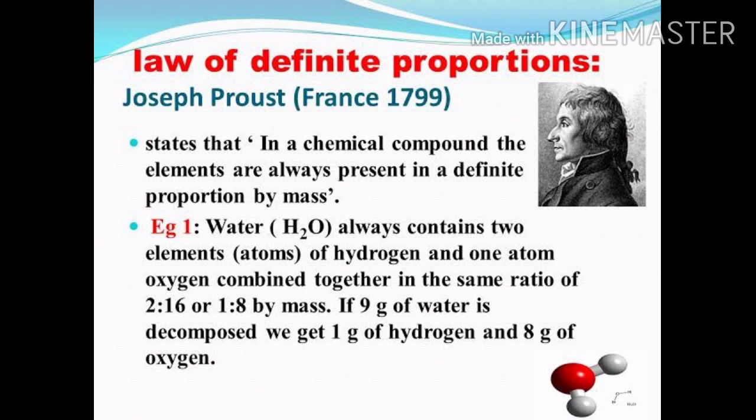The number of different elements in a compound is fixed. This ratio is what we call the law of constant proportion, also called the law of definite composition. So the ratio of atoms in a compound is fixed. And since atoms have fixed masses, the elements combining in a compound always combine in a fixed ratio by mass.